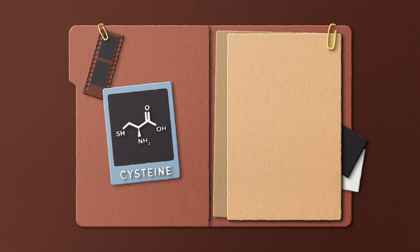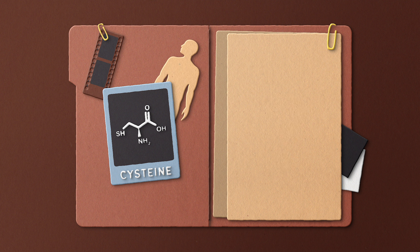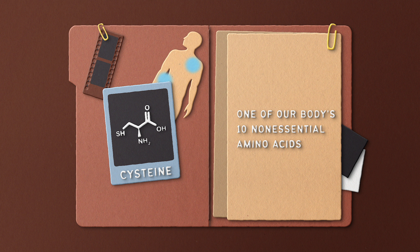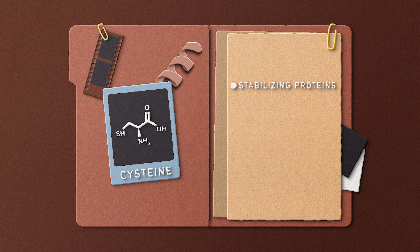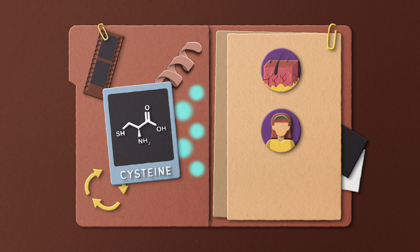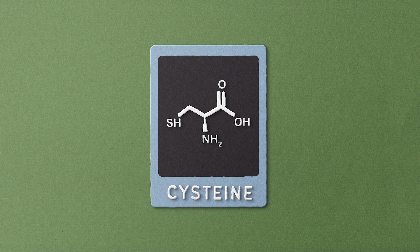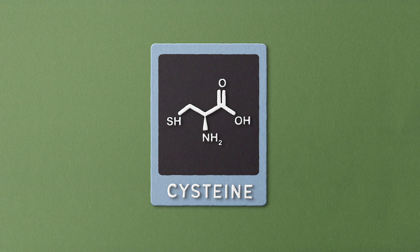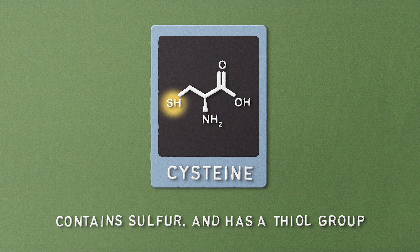Before we get into disulfide bonds, we first need to talk about cysteine. It's not called a cysteine bond, but stay with me. Cysteine is one of our body's 10 non-essential amino acids, meaning we can synthesize it by ourselves. Cysteine plays a very important role in stabilizing proteins, detoxification, and supporting different metabolic functions, and you can also find it in skin, hair, and nails. The composition of cysteine is unique — it's one of the only two amino acids that contain sulfur, and the only one that has a thiol group, which essentially is a sulfur-hydrogen bond.